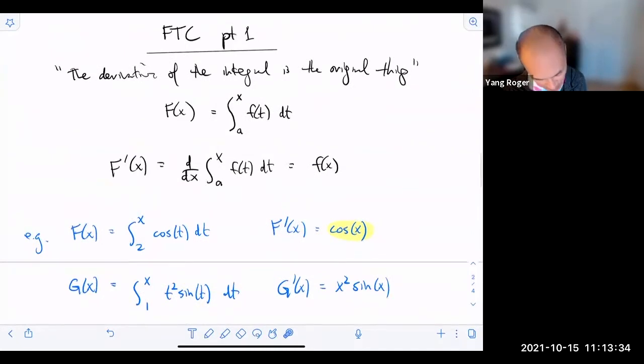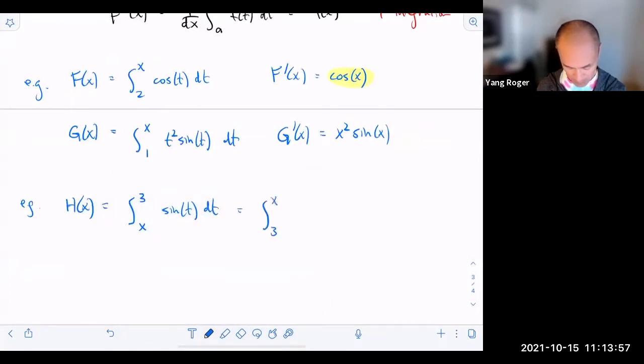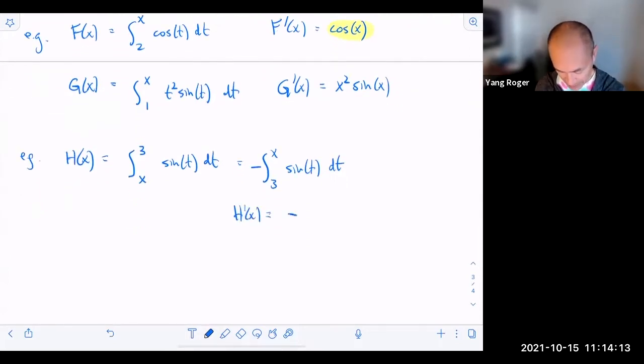So in this theorem, we need x to be on top. Need x to be the upper limit of integration. So can you guys remind me what happens if I interchange these limits of integration? What happens when I flip those? That's right. You pick up a negative sign. So there's going to be a negative one. And then now I just take the derivative like I did before. So my h prime of x is just going to be negative sine of x. That's it. That's your answer.